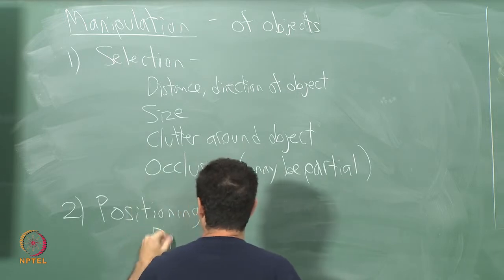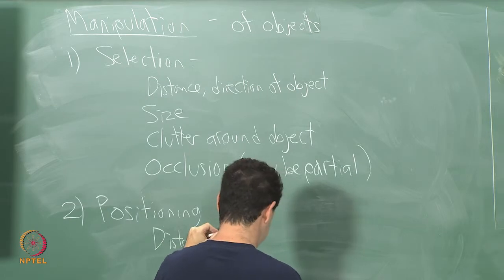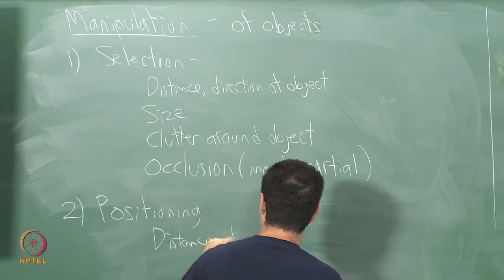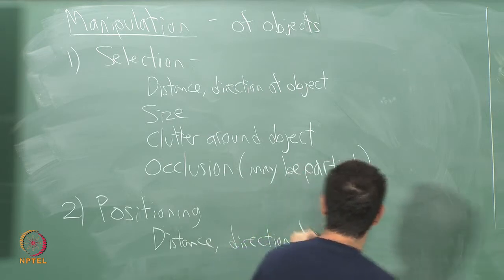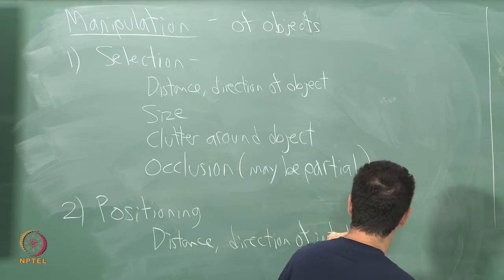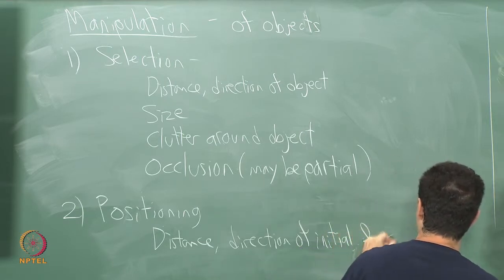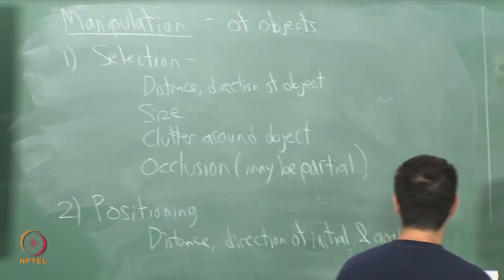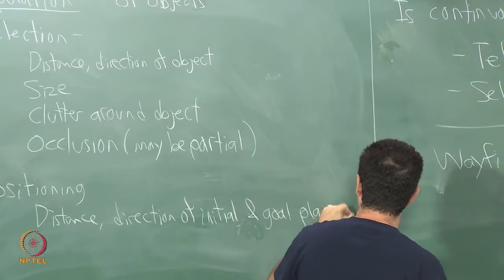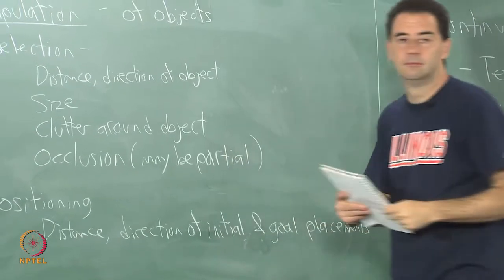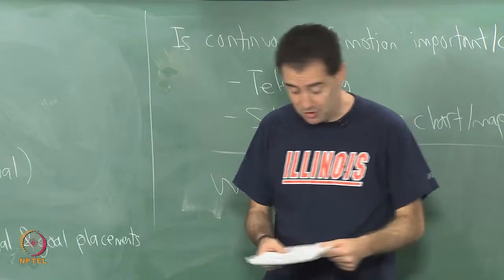I would like to place the object back. We can have distance and direction of the initial angle and goal configurations. Here I will just call them placements. How far am I moving the object and where do I have to bring it with respect to myself?